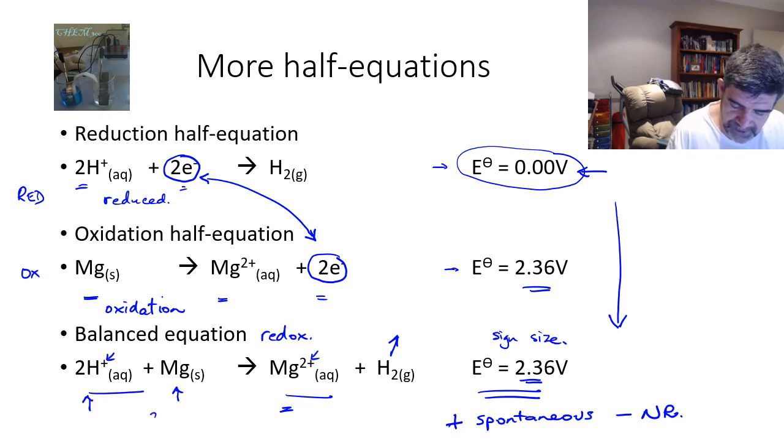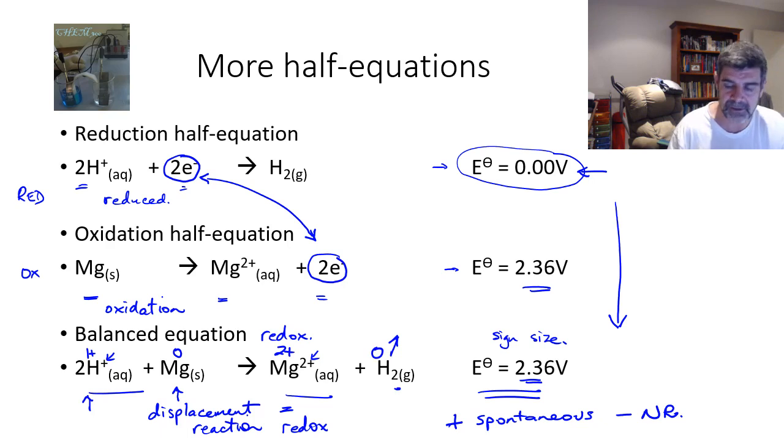This is, of course, an example of a displacement reaction. But it's not just a displacement reaction, it's also a redox reaction. As we saw previously, the hydrogen has an oxidation number of plus one. Magnesium, because it's in elemental form, is zero. Magnesium two plus is two plus, of course. And hydrogen in its now elemental form, as a diatomic element, is zero.